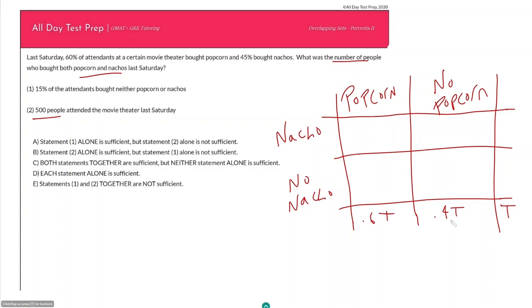45% bought nachos and so that would be 0.45 here, which means 55 percent of my movie theater attendees did not buy nachos, that's 0.55T. This is all information from the prompt, and so circle this because it's universal and applies to both statements.